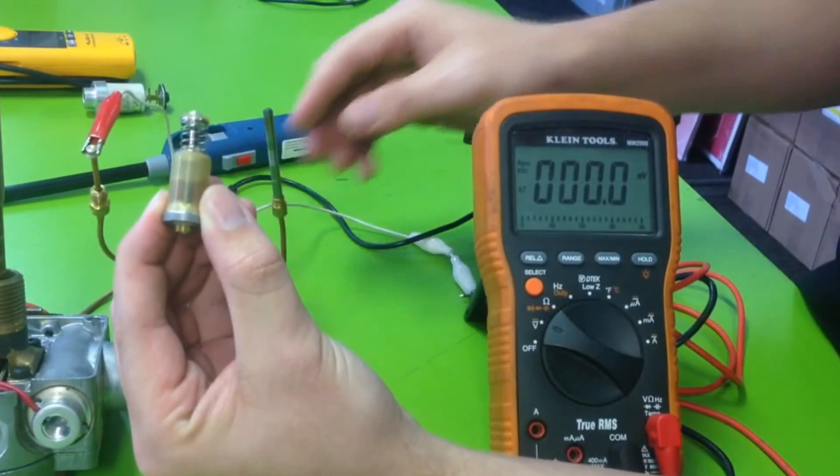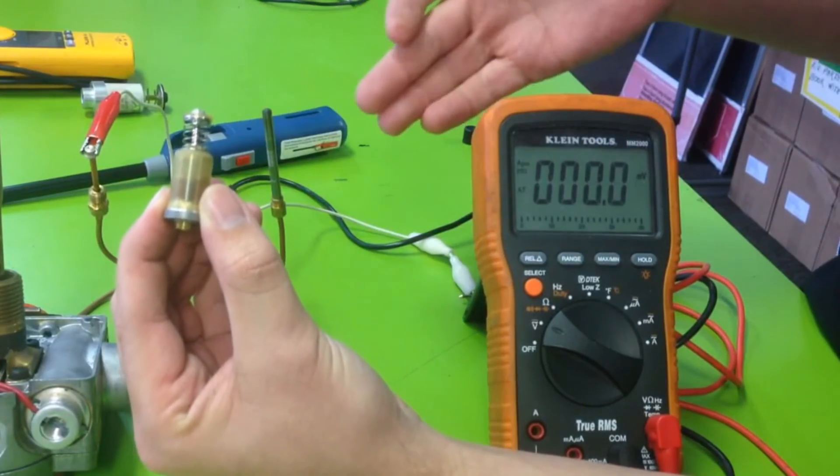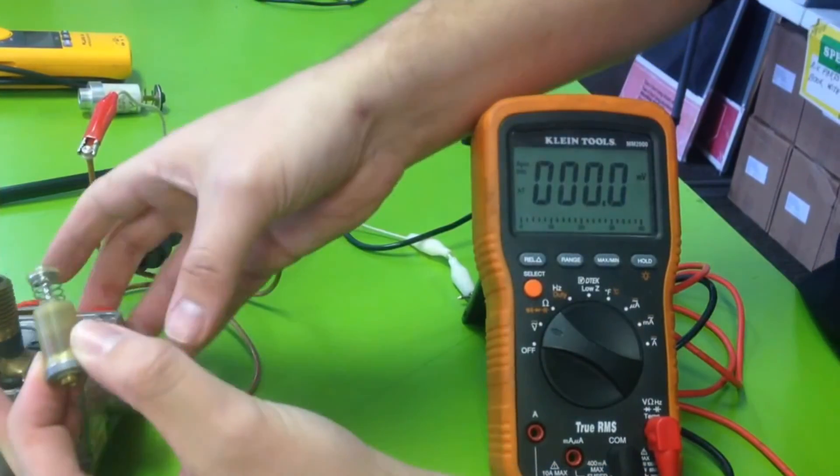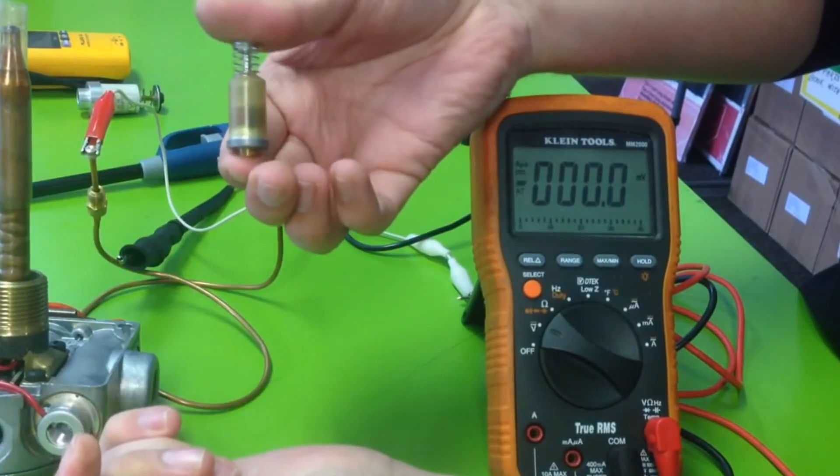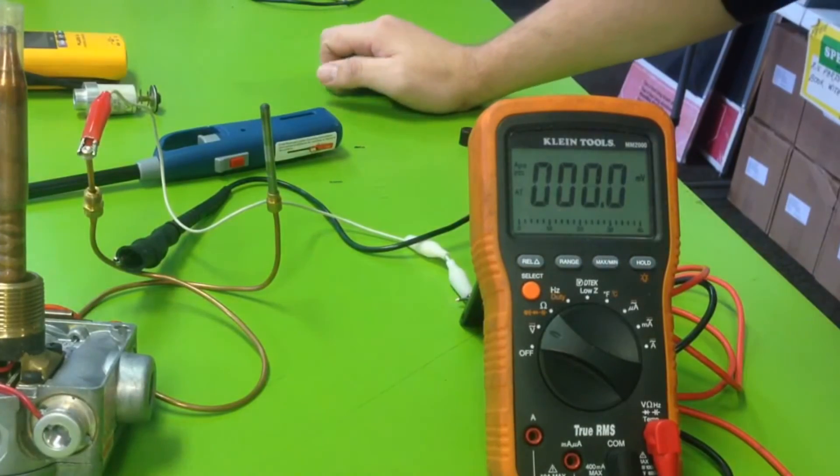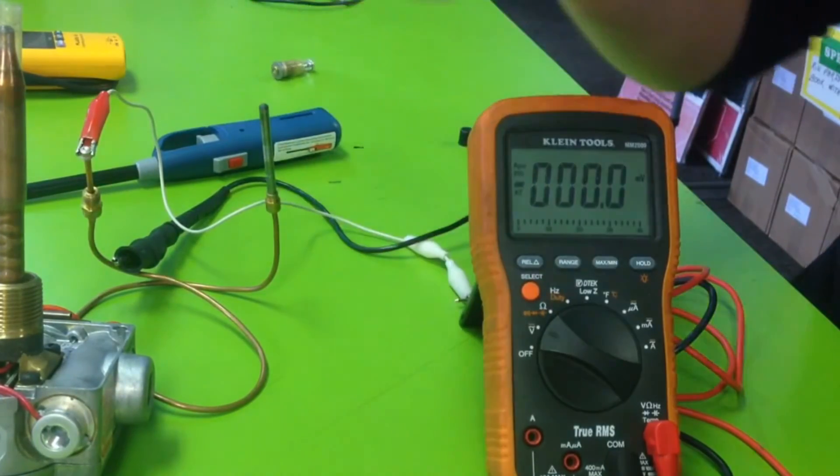So when a thermocoupler is not producing millivolts, it basically will not hold down the internal coil of the thermocoupler control. That's the best way I can describe that to you. You saw my other video - you can actually buy these thermocoupler testers.